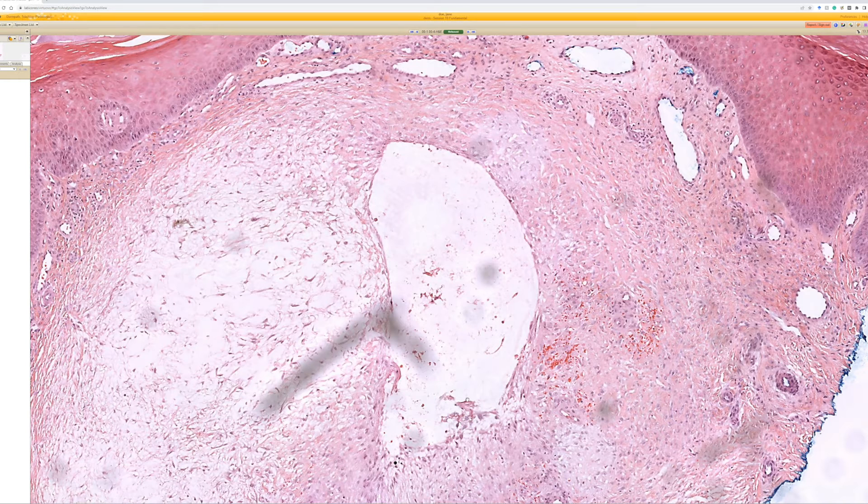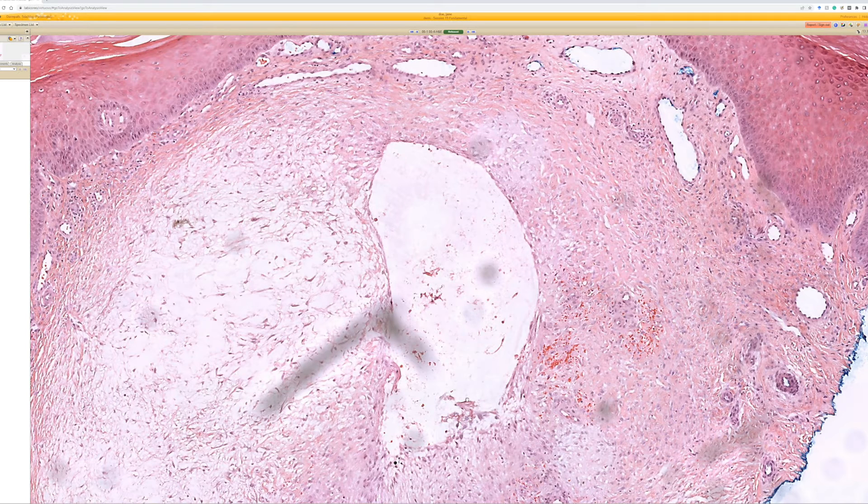But do note that sometimes, depending on tissue processing, sometimes once you cut into it, all the mucin falls out and it washes away during processing. And you do get a just empty clear space. So it can either be an empty white or clear space, or it can be filled with bluish stuff and debris.